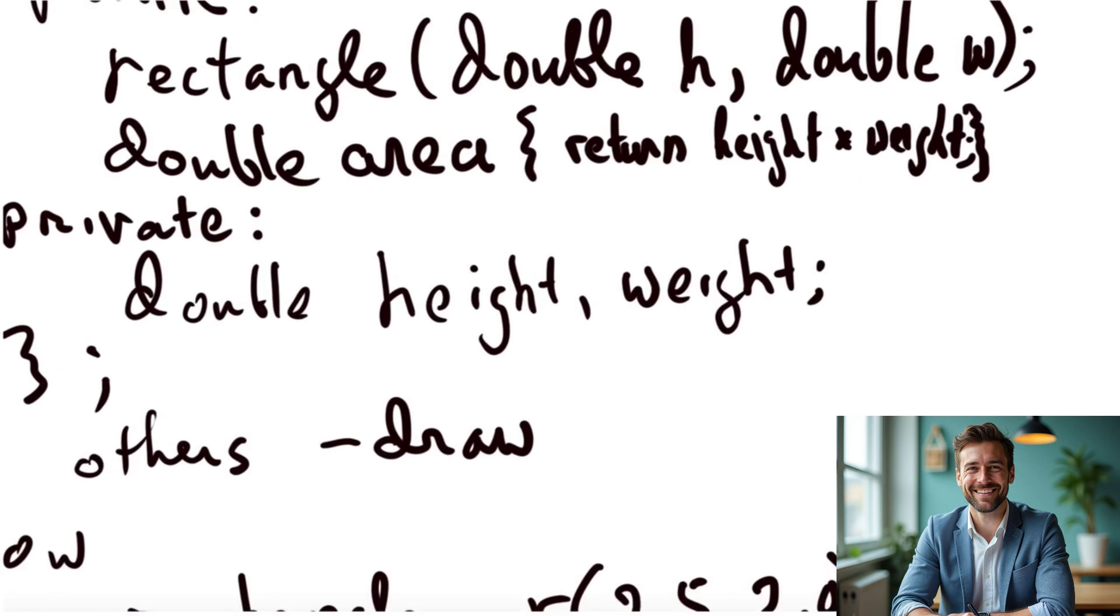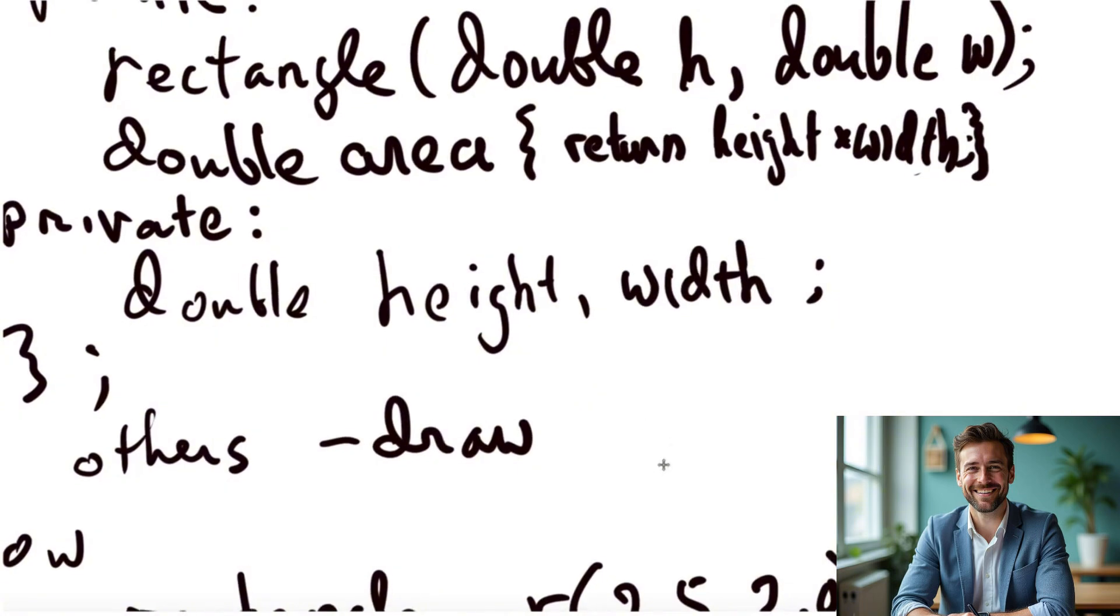The area requires returns height times width. Excuse me that shouldn't be weight that should be width. I don't know why I have it as weight. And so with that correction we have also private. Typically in modern languages and this includes languages like Java and Python, you hide away the representation in this case a height and a width. And we could consider other operations if we were to flesh this out such as a drawing operation.